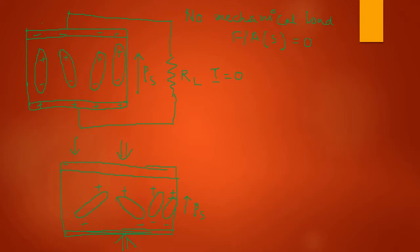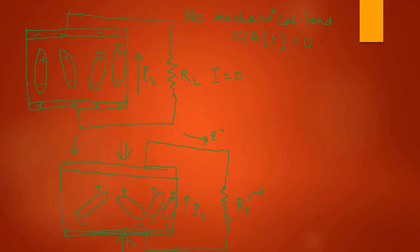If polarization is reduced, the negative charges or electrons have to be compensated. They will be compensated through the external circuit where these two ends are connected through load resistance RL. There will be a flow of current because the polarization is reduced, meaning the number of electrons at this surface will be reduced. So electrons will move in this way, producing a non-zero current flowing in this direction.